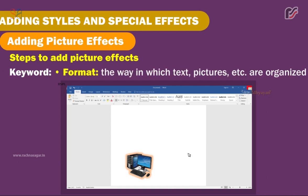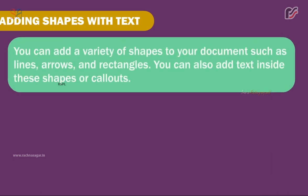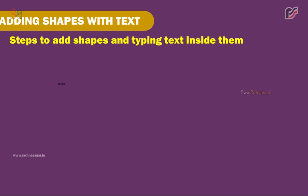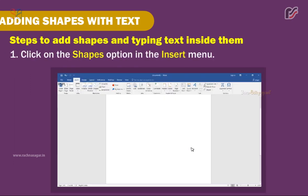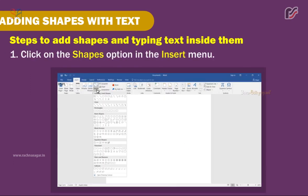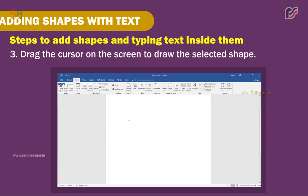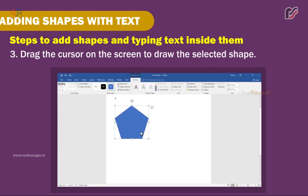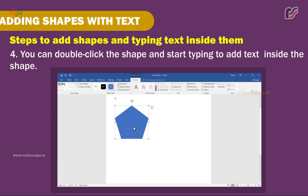Keyword — Format: the way in which text, pictures, etc. are organized. Adding Shapes with Text. You can add a variety of shapes to your document such as lines, arrows, and rectangles. You can also add text inside these shapes or call-outs. Steps to add shapes and type text inside them: 1. Click on the Shapes option in the Insert menu. 2. Select the shape you want to add. 3. Drag the cursor on the screen to draw the selected shape. 4. Double-click the shape and start typing to add text inside it.